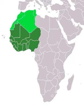West Africa has been defined as including 17 countries: Benin, Burkina Faso, the island nation of Cape Verde, Gambia, Ghana, Guinea, Guinea-Bissau, Ivory Coast, Liberia, Mali, Mauritania, Niger, Nigeria, the islands of St. Helena, Ascension and Tristan da Cunha, Senegal, Sierra Leone and Togo. The population of West Africa is estimated at about 362 million people as of 2016.